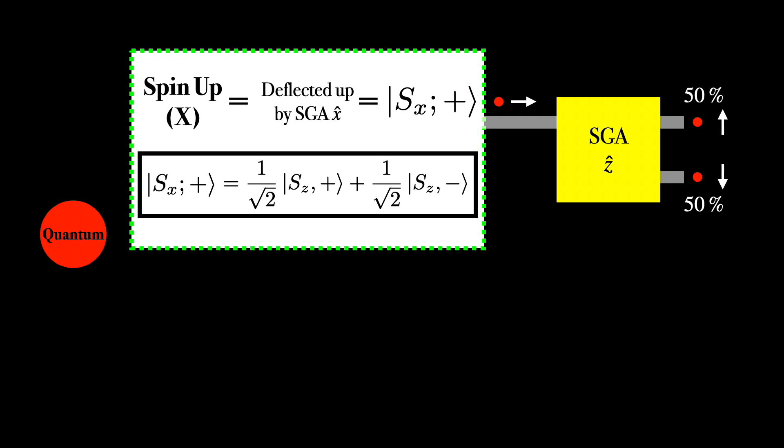So in the formalism of quantum mechanics, as soon as you know that the atom is spin up in the x direction, it must immediately also be in a superposition in regards to its spin in the z direction. So it seems to have no definite spin in the z direction at this stage. Whatever information you had previously about the spin in the z direction is completely lost now that you know the atoms are spin up in the x direction.